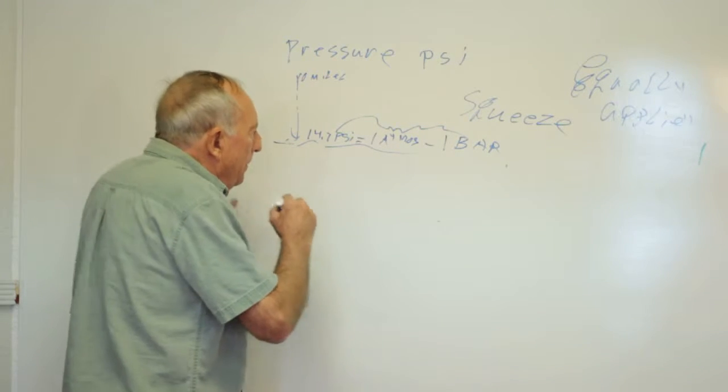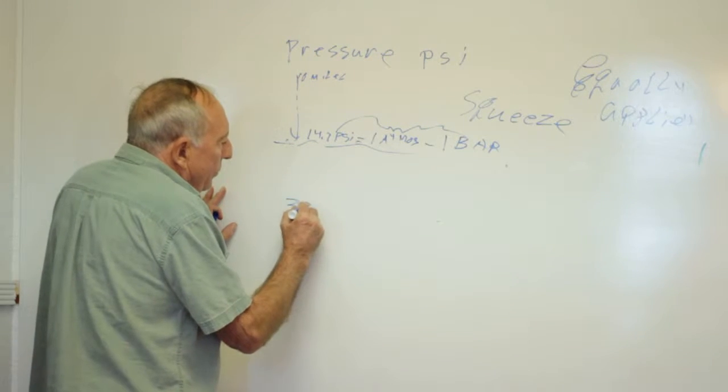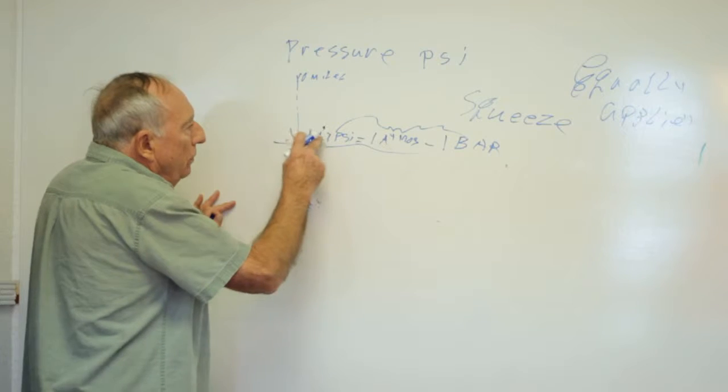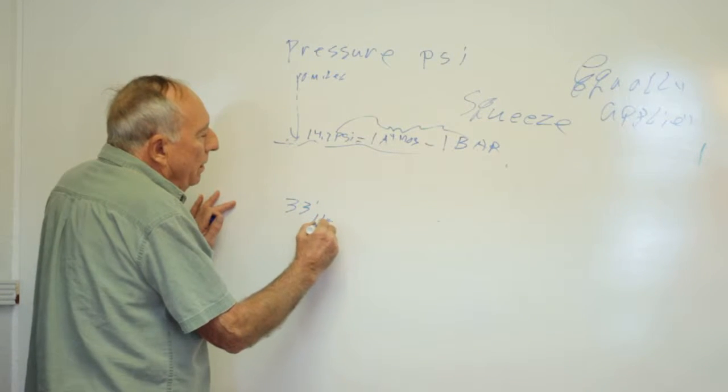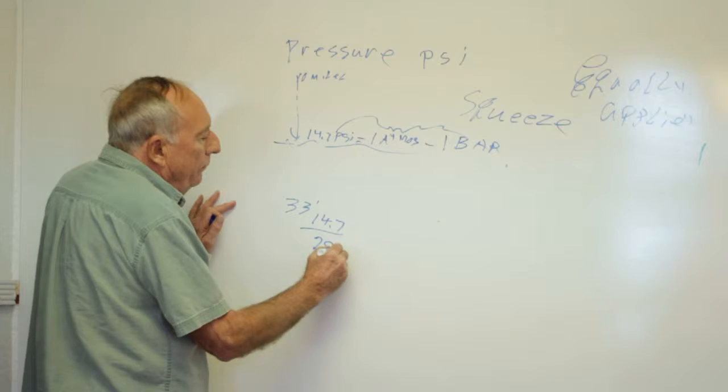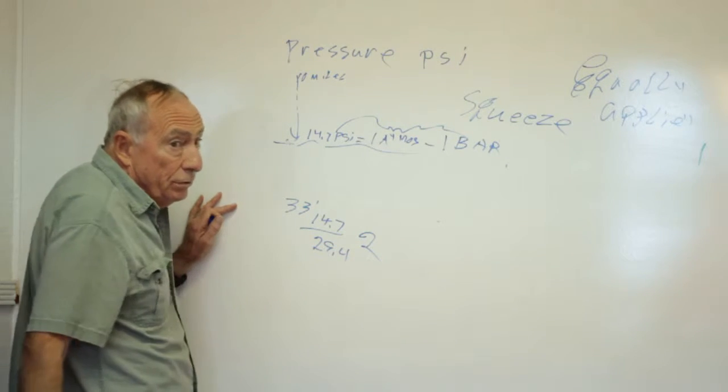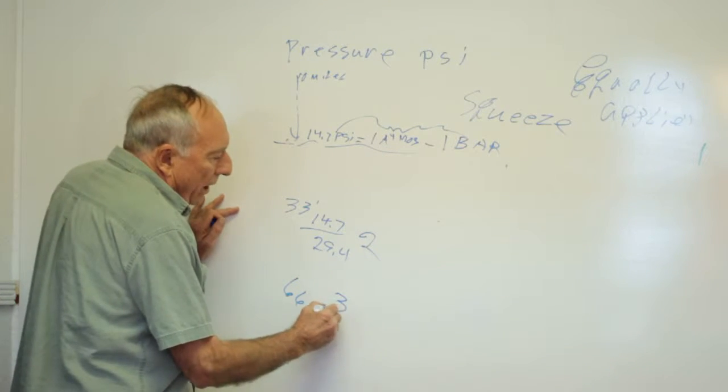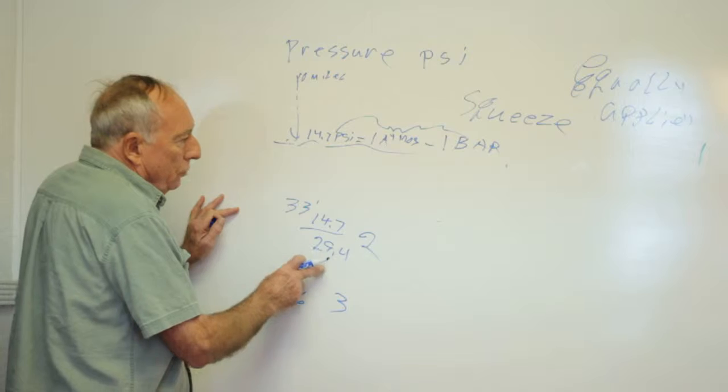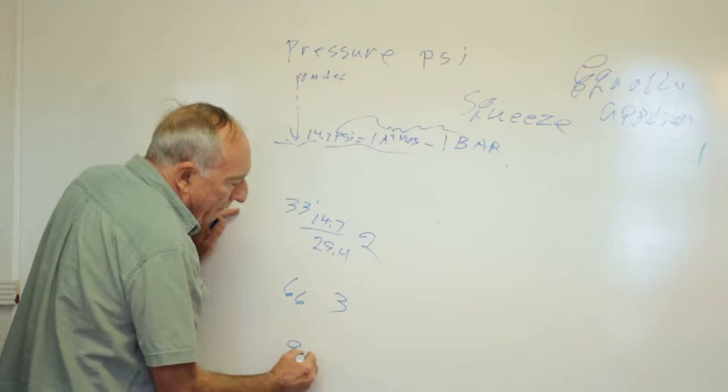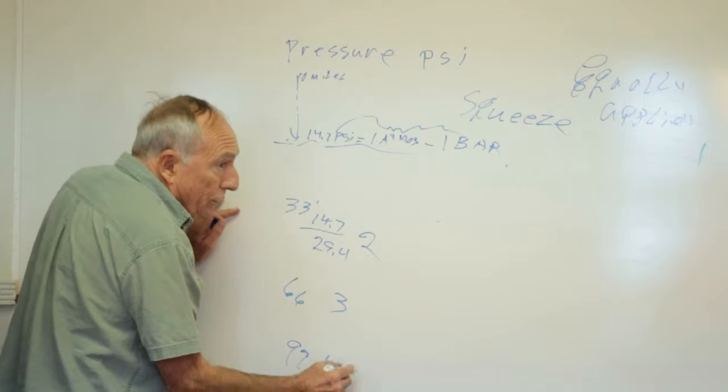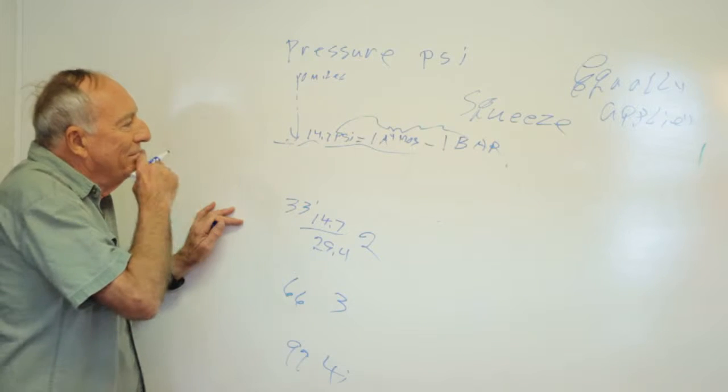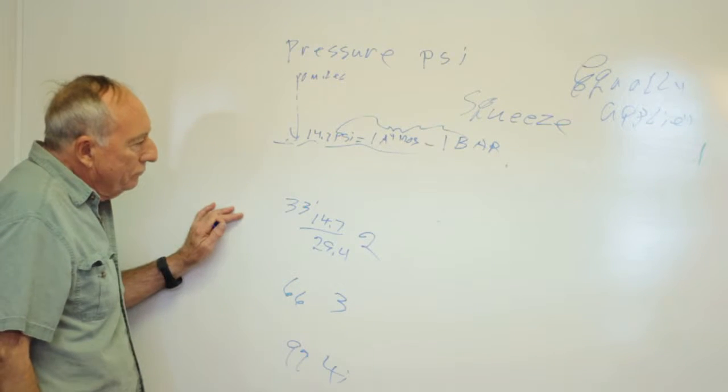Because water weighs a lot more than air. In fact, it only takes 33 feet of water to weigh the same as 10 miles of air. So if we go down 33 feet under water, we're picking up another 14.7. We're a total of 29.4, or two atmospheres total. One water, one air. 66 feet, three atmospheres total. Two waters, one air. 99 feet, four atmospheres total. Three water, one air.